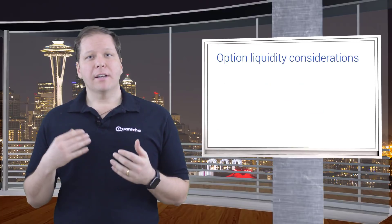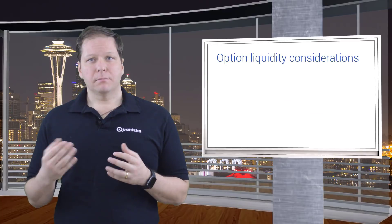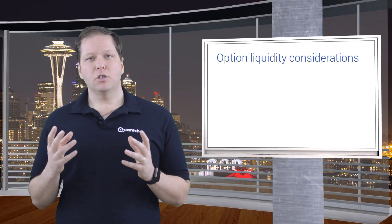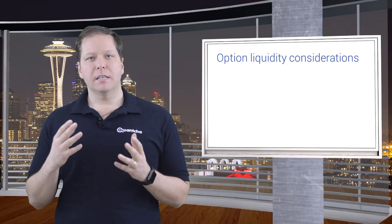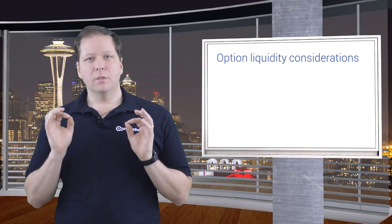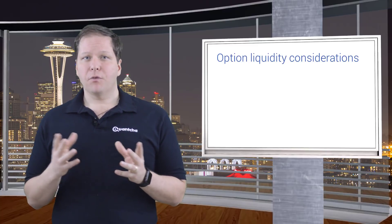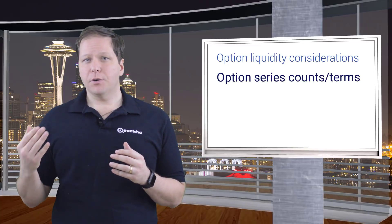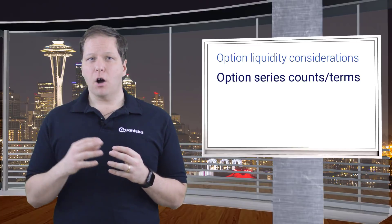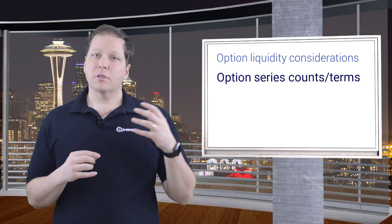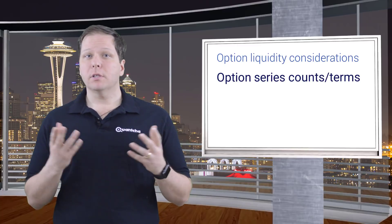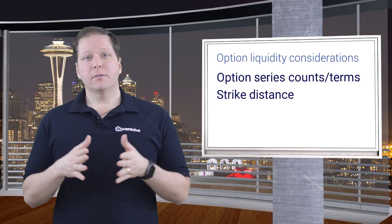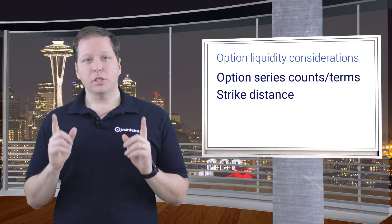There are a lot of factors to think about. The first set of factors we consider has to do with how granular an investor can get when staking out a position. For this, we consider things like how many options series a specific stock offers, as well as whether it offers weekly options or leaps. We also analyze the width of the strikes, especially near the money.